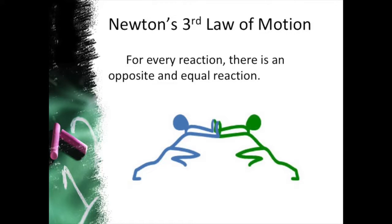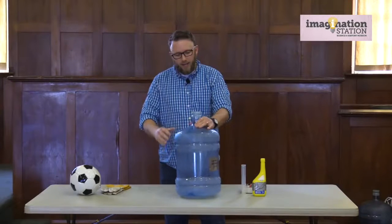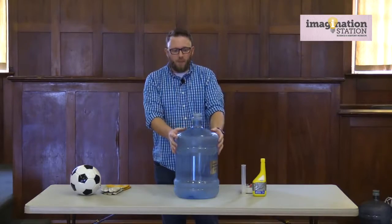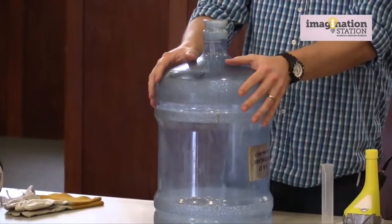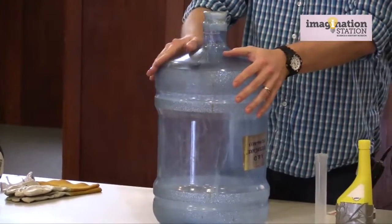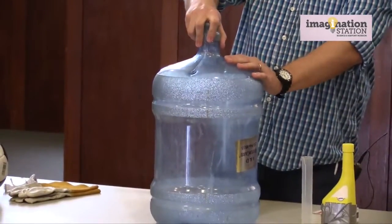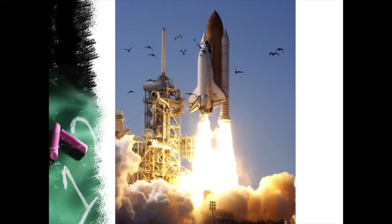The third law is the one that applies mostly to our rocket that we're going to be doing today, which is that for every action there is an equal and opposite reaction. And that's what we're going to see with our water jug rocket booster. You'll notice we're using a typical thick plastic water jug, so that whenever we get to our experiment it's not going to explode — at least we hope not. You'll also notice our jug is actually facing the opposite way of a typical rocket booster.